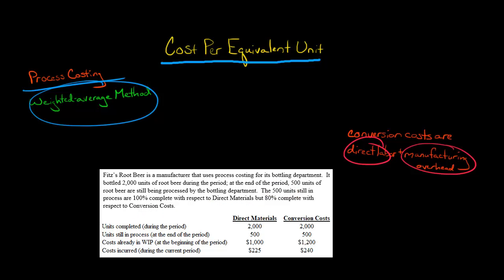Well, think about it. Direct materials for root beer is just the actual liquid, the root beer itself. So it could be that the root beer has been poured into the bottles, but there's still some additional work, some labor that needs to be applied, some other things that need to be done for them to be finished by the bottling department.